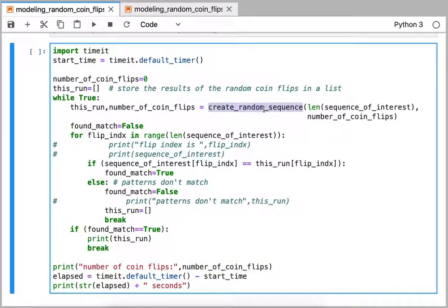Let's look at that create_random_sequence function. We're passing in how long of a sequence to make and we're keeping track of how many coin flips we've used so far.